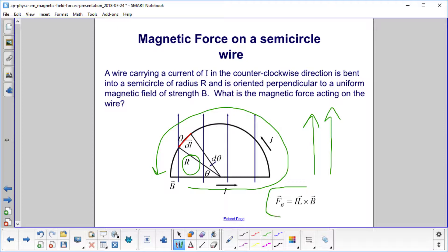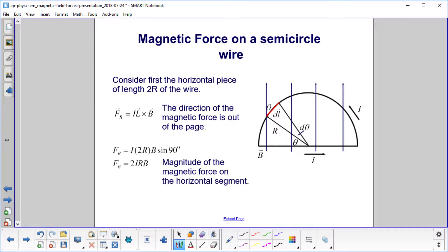We'll be using the equation for the force, I L cross B. We're going to break this into two pieces. First, we'll just consider the horizontal piece. And what's the length of that? Well, it's 2R, right? Twice the radius.